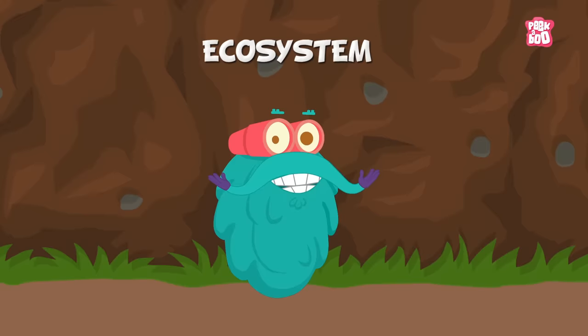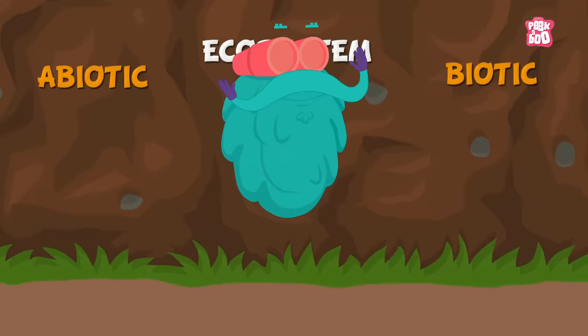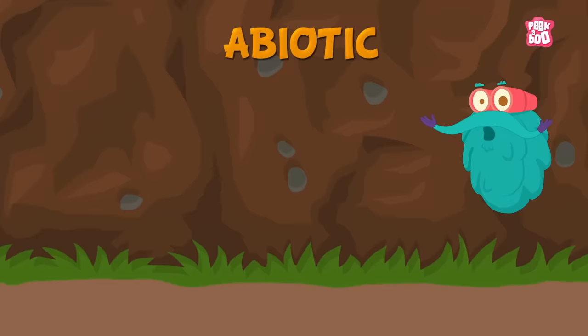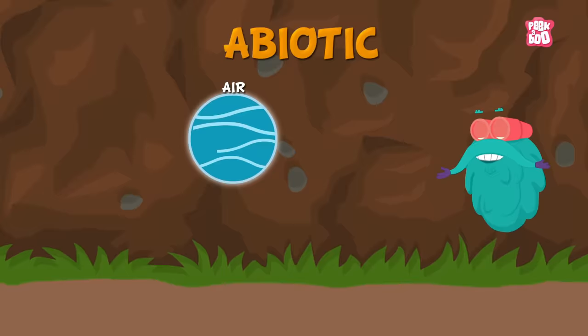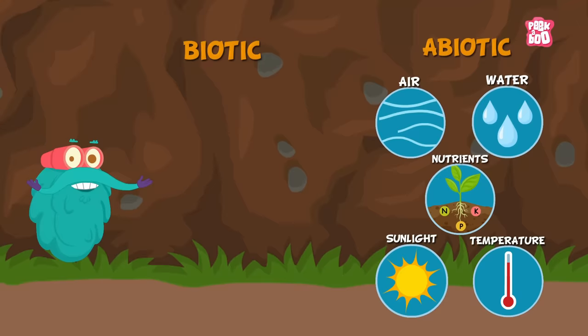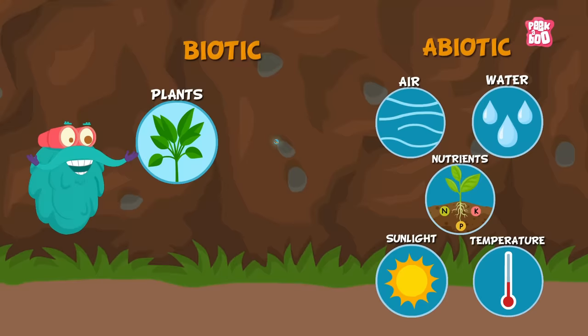Ecosystem includes two major components: biotic and abiotic components. Abiotic components are the non-living elements of the system such as air, water, sunlight, nutrients, and temperature. Biotic components are all the living organisms living in the system, like plants, animals, fungi, microorganisms, and you.